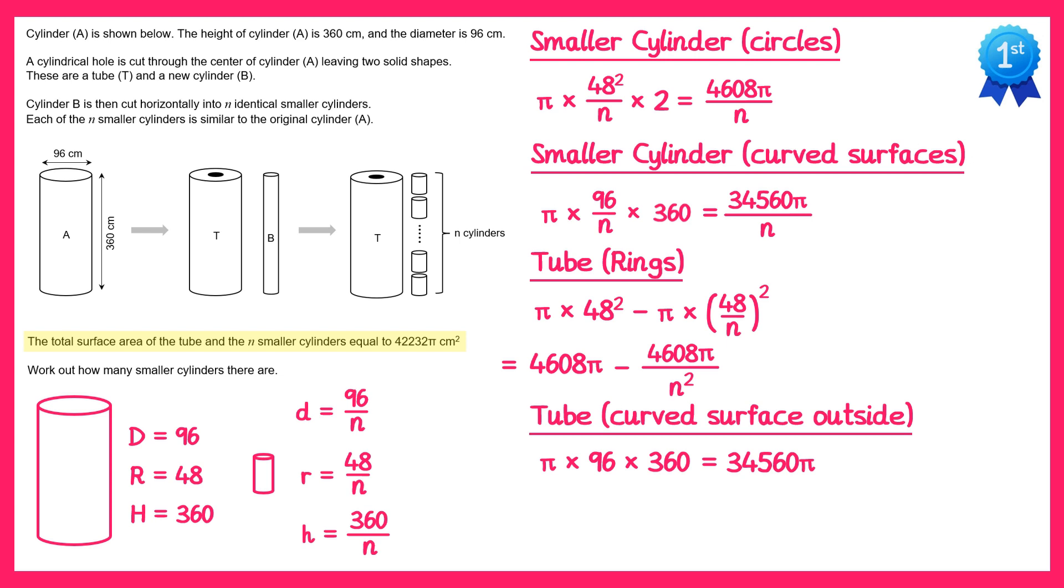Now there's one more surface we need to find, and it's not so obvious. This is the surface on the inside of the tube, which is the hole that's left behind when we remove cylinder B. So this is the curved surface on the inside. Now if you think about it carefully, that surface will have exactly the same area as the curved surface of all of the smaller cylinders, and we've already worked that out. It's 34,560 pi over n.